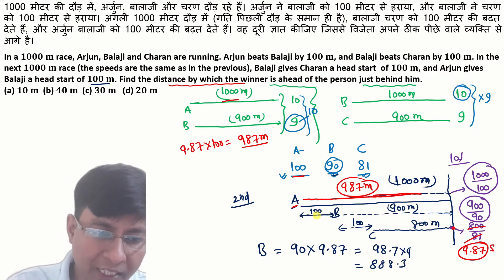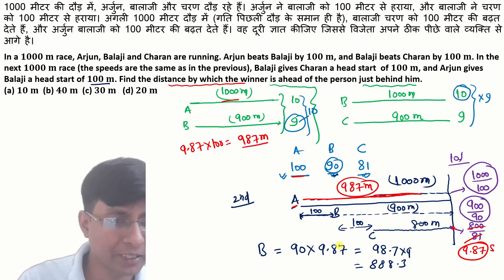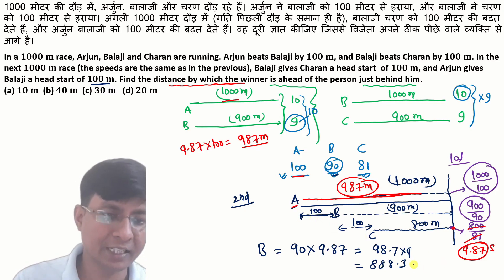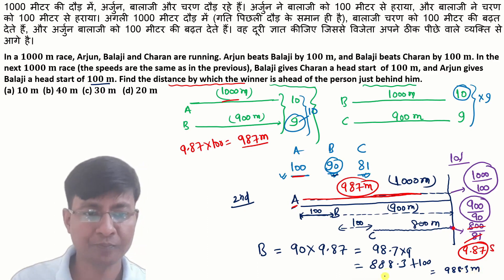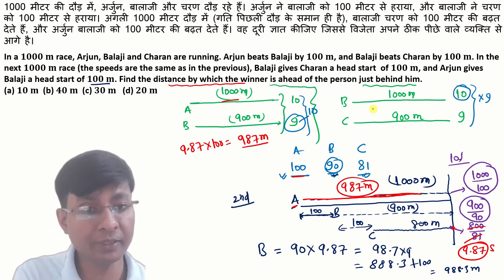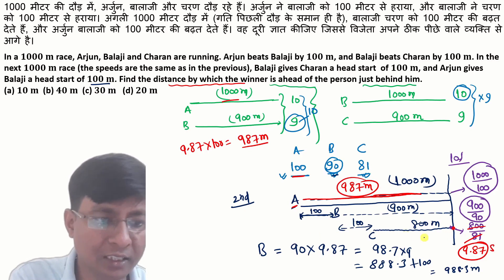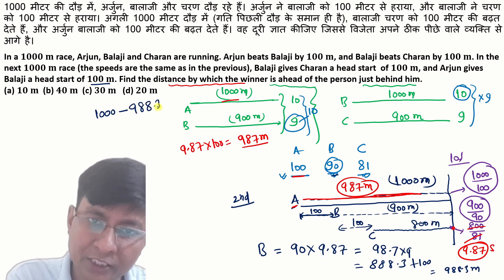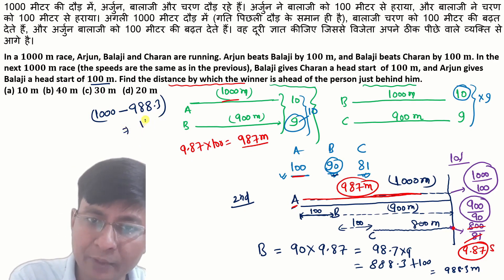B is here at 100 meters head start. At the time C finishes (9.88 seconds approximately), both A and B are still running. A and B take 10 seconds total, so at 9.88 seconds, A has traveled 988.3 meters. C has reached the destination at 1000 meters. The distance between C and the next person is 1000 minus 988.3, which gives approximately 11.7 meters.